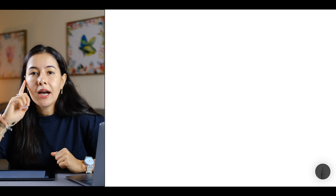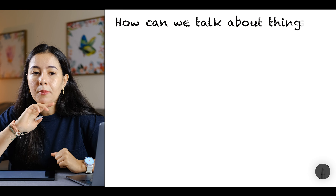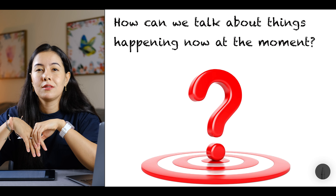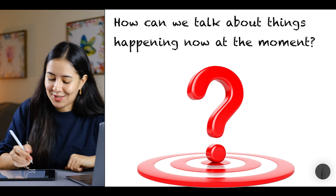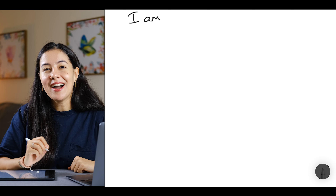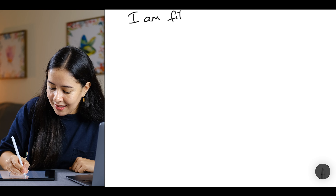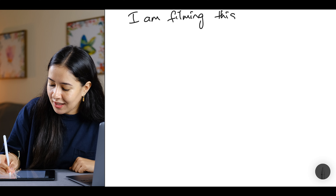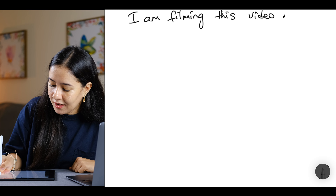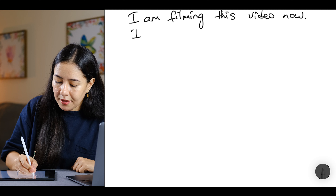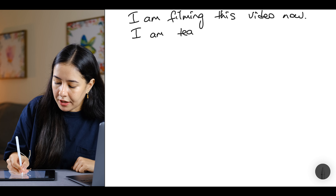Let me ask you first, my friend — how can we talk about things happening now, at the moment? We say: I am. For example: I am filming this video now. I am teaching now.